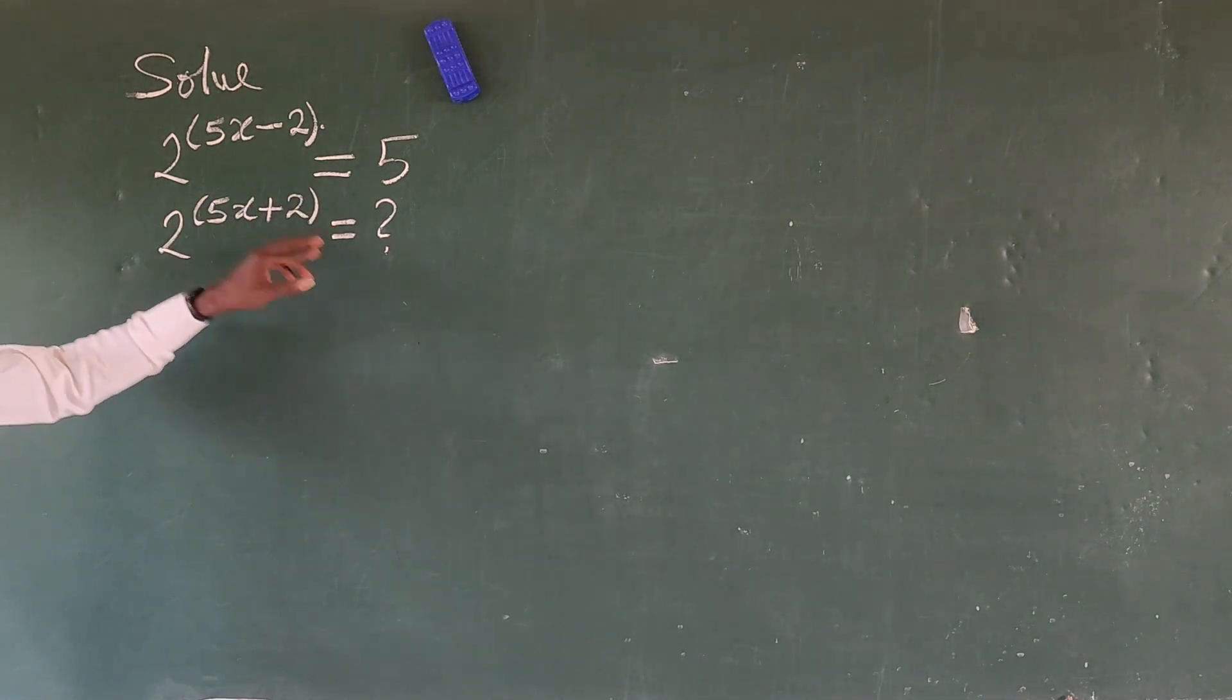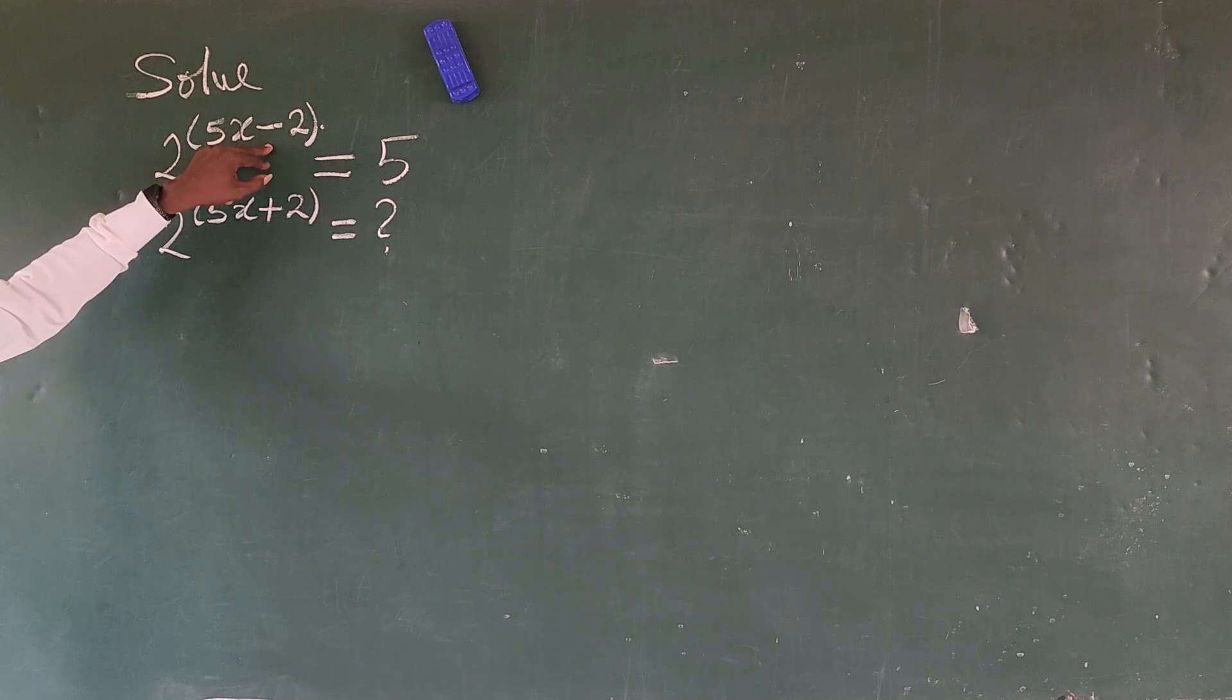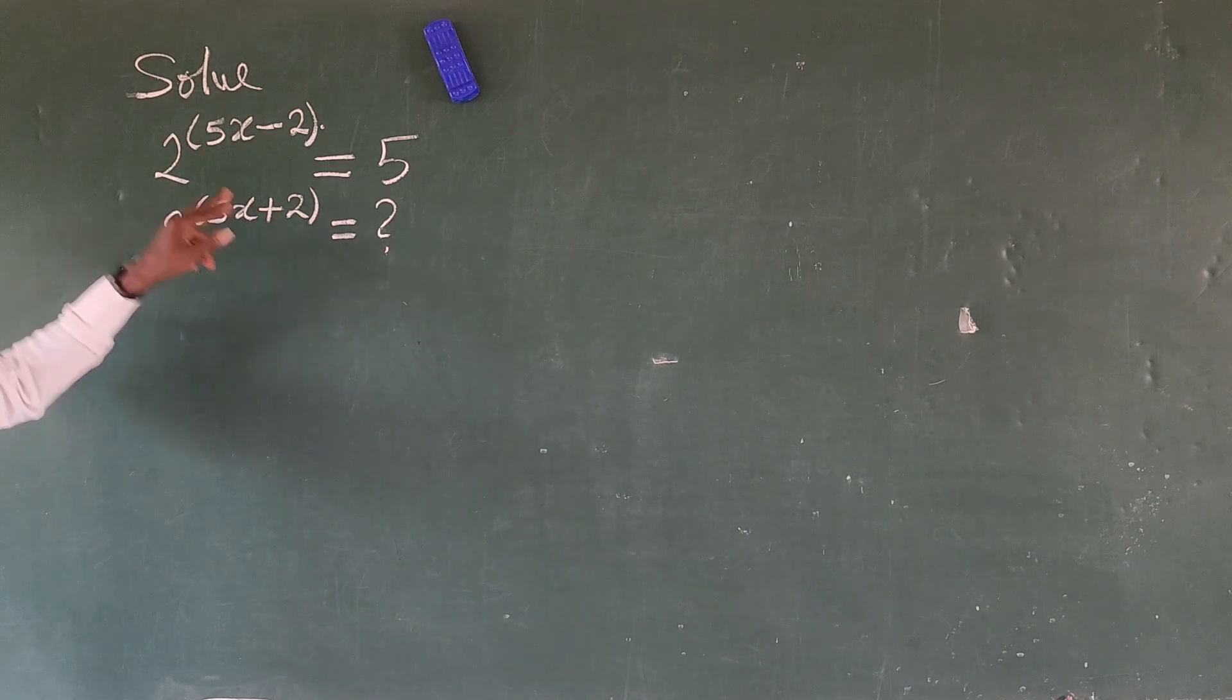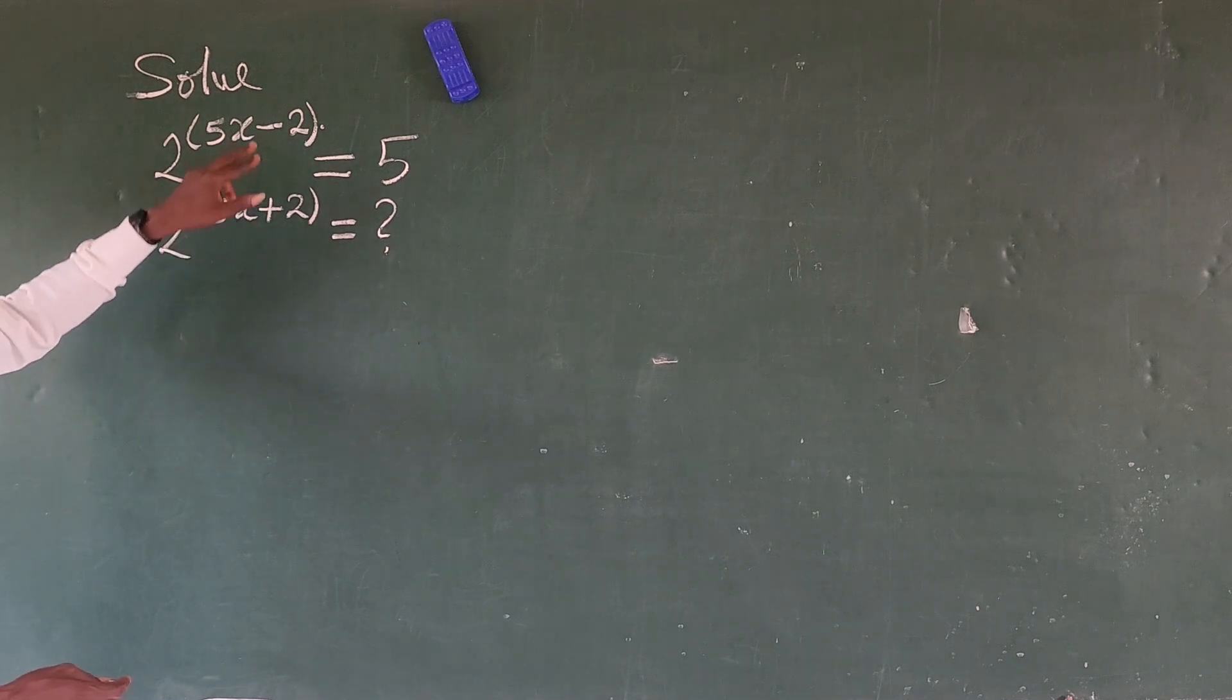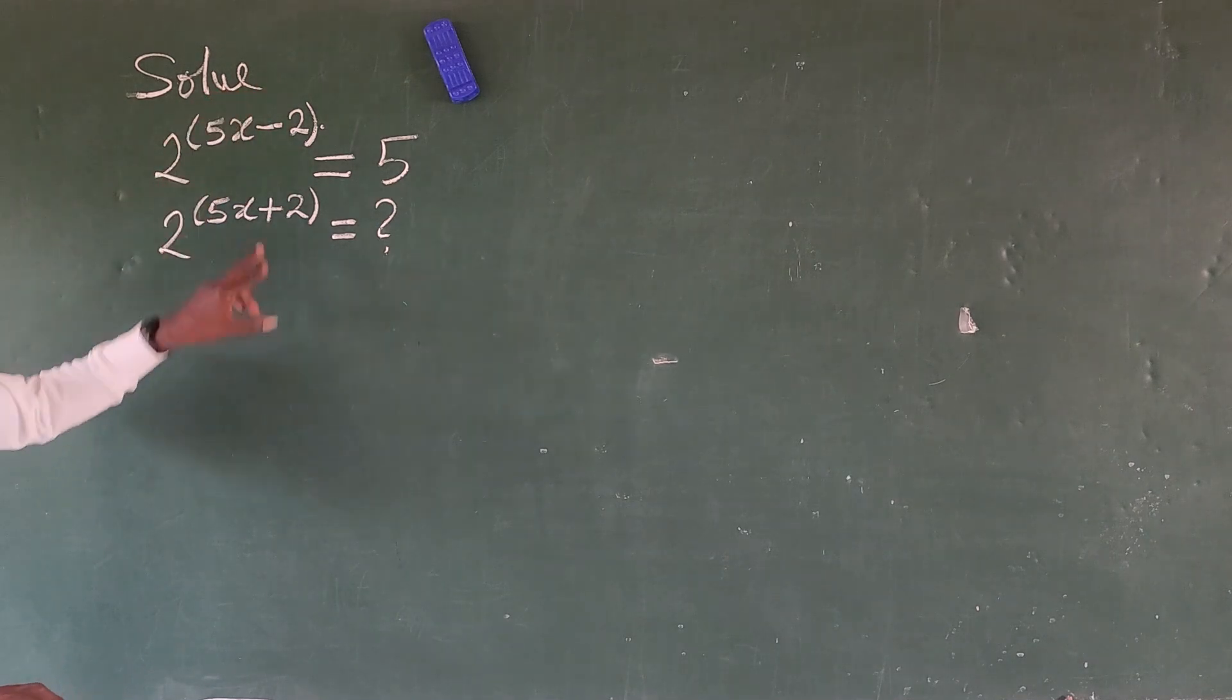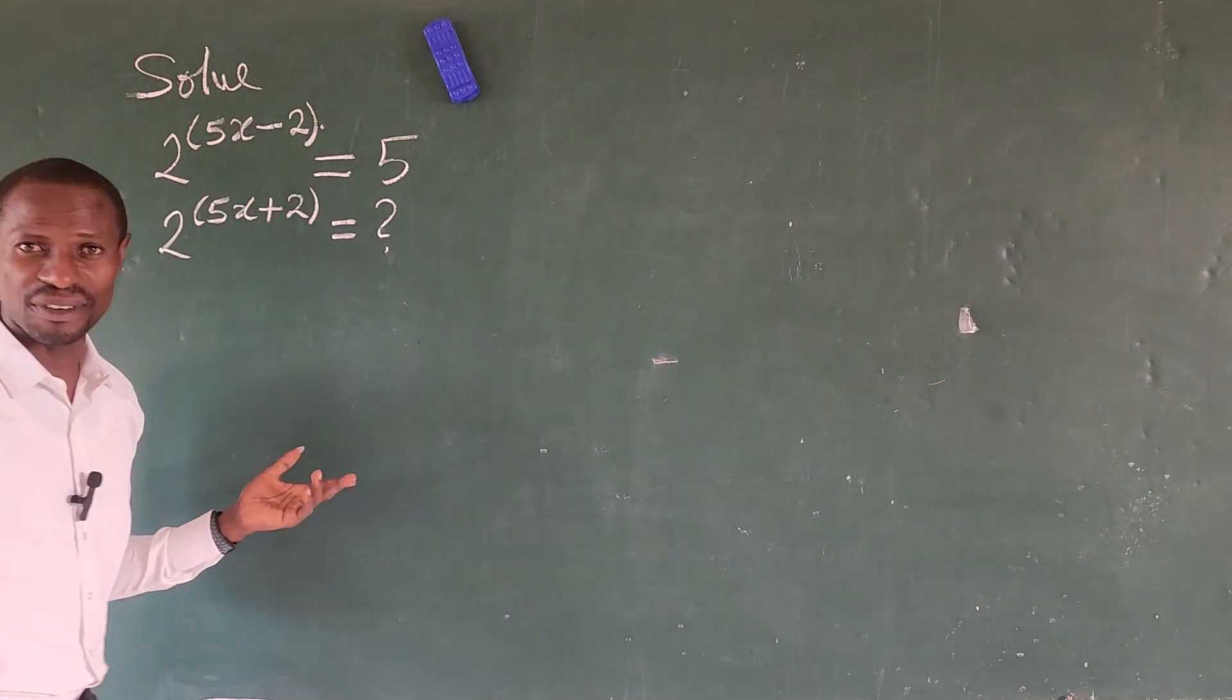I will ask myself, what will I add to this exponent here to give me plus 2? Because here we are having 5x and here 5x already. So what number will I add to the exponent here to give me plus 2? To change this to plus 2. It is just plus 4.